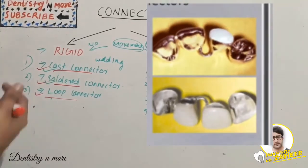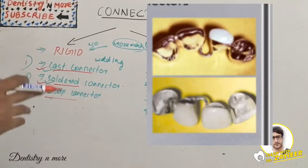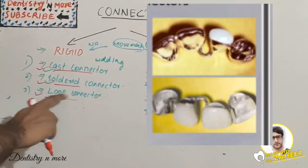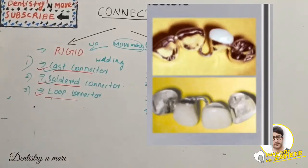The third rigid connector type is the loop connector, which is very rarely used. It consists of a loop on the lingual aspect.